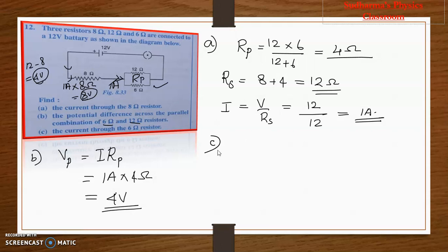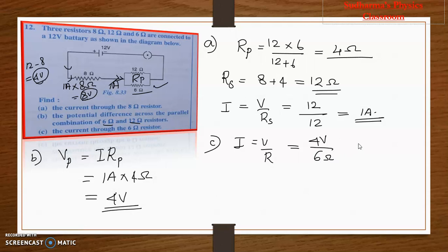Now, the current through the 6 ohm resistor — it is in the parallel combination. I = V / R, but we must use 4 volt, not 12 volt, because 8 volt is already given to the 8 ohm resistor. So the voltage for the parallel combination is 4 volt. Current through 6 ohm = 4 / 6 = 2/3 ≈ 0.67 amperes.